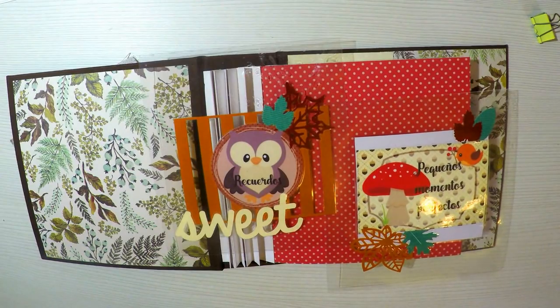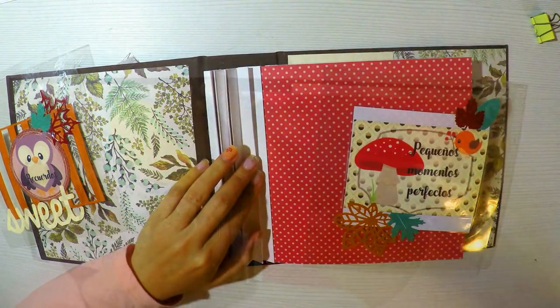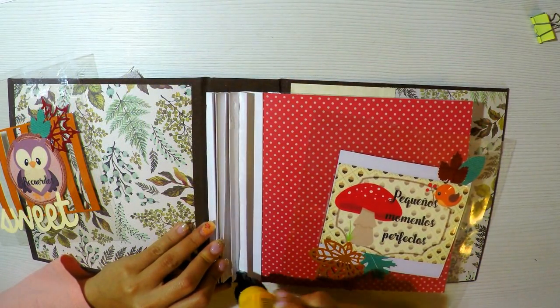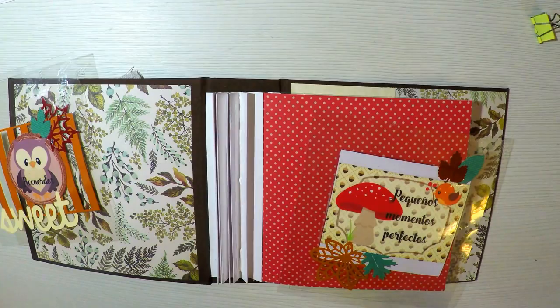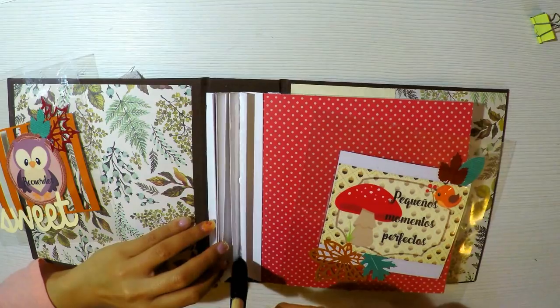Vamos a pegar nuestra primera hojita. Esta de aquí me encanta. Es como una especie de buhito. Son printables, y lo que no son printables son recortables de la Sizzix, que es una maquinita troqueladora con troqueles que compro en diferentes sitios, en tiendas de manualidades, en Aliexpress. Hay muchos sitios donde los venden.